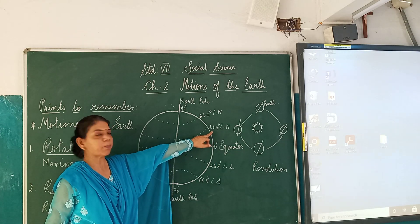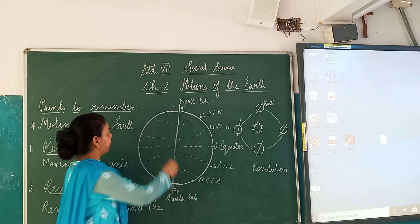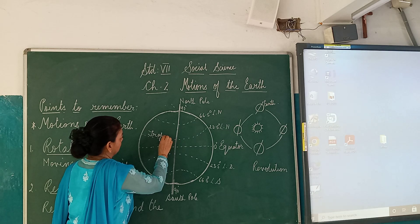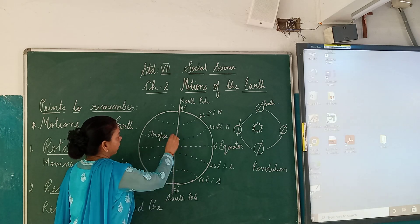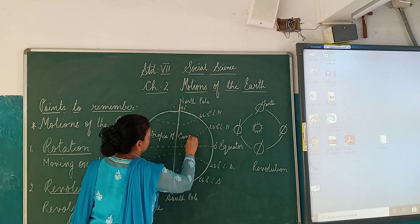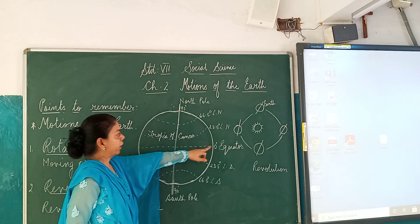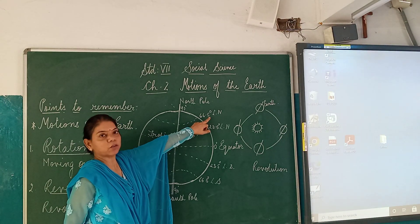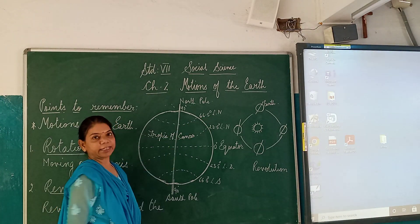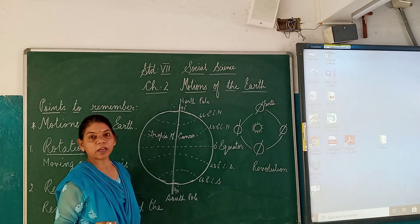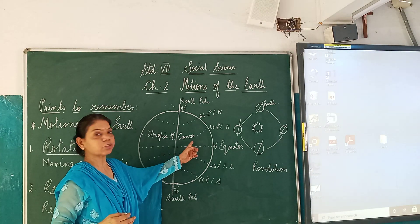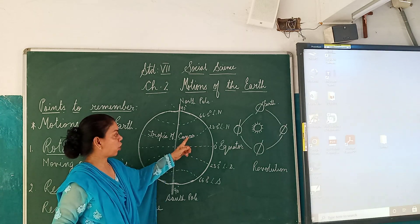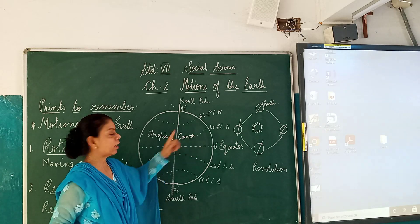As we move on further, we have 23.5 degree — that is the Tropic of Cancer. The Tropic of Cancer lies from 23.5 degree north to 66.5 degree north latitude. Do you know, children? The Tropic of Cancer passes through our country India. Remember: the Tropic of Cancer passes through India.